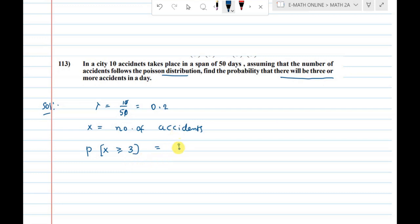Three or greater. P of X greater than or equal to three equals P of 3 plus P of 4 and so on. We'll take the complement: equals 1 minus P of 0 minus P of 1 minus P of 2.